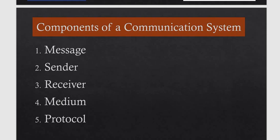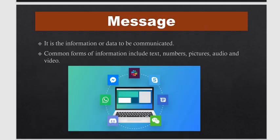آج جو ہمارا topic ہے وہ ہے components of a communication system۔ Communication system کے عمل کو موثر، قابل اعتماد اور درست بنایا جاتا ہے جس سے معلومات کا تبادلہ آسان اور موثر ہو جاتا ہے۔ اس کے کچھ components ہوتے ہیں جس کے ذریعے ہمارا ایک دوسرے سے communication کا ذریعہ آسان ہو جاتا ہے۔ ان کو میں one by one سمجھاؤں گا۔ پہلا جو component ہے وہ ہے message۔